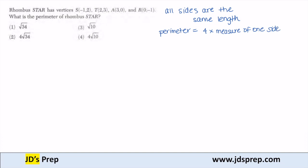In order to find the measure of one side, we have to utilize our distance formula. The distance between any two points is the square root of (x₂ - x₁)² plus (y₂ - y₁)².